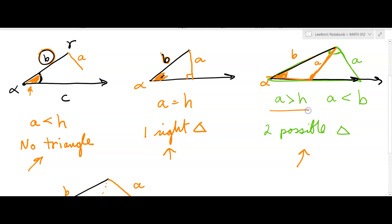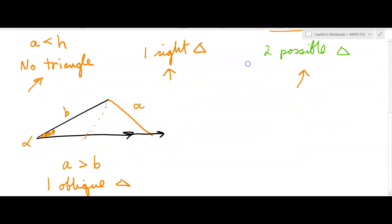That happens if a is greater than h, but less than b. And then, finally, if a is greater than b, you'll only get one triangle, and it will be oblique. Greater than or equal to b. Let me just put that in there. Because it could be an isosceles triangle. An isosceles triangle has two sides that are equal.